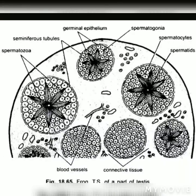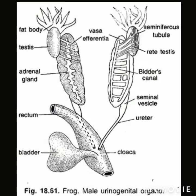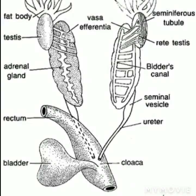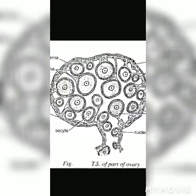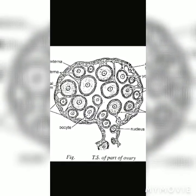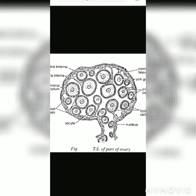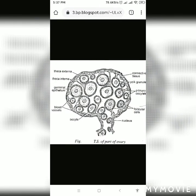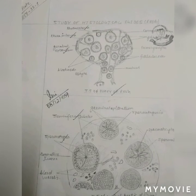Comments on TS of testis of frog. The outer covering is the peritoneal epithelium or peritoneum. Numerous seminiferous tubules are held together by the intertubular connecting tissue. Bundles of spermatozoa are seen in the lumen of the mature seminiferous tubules.